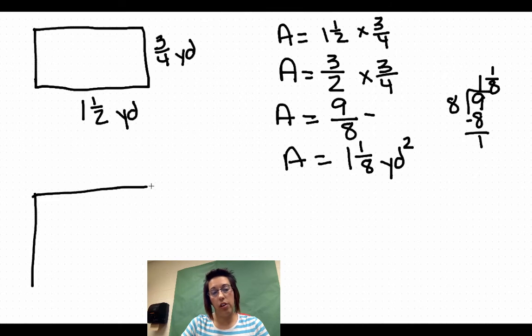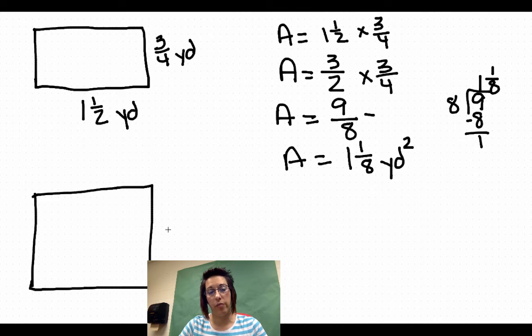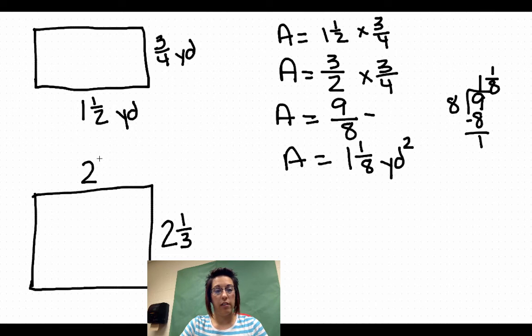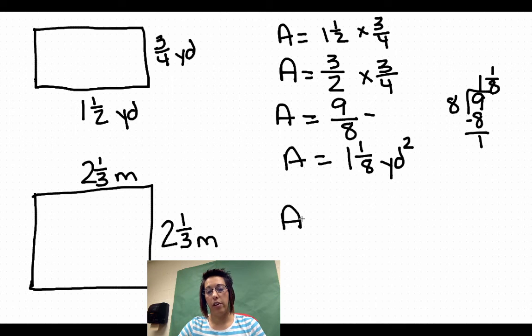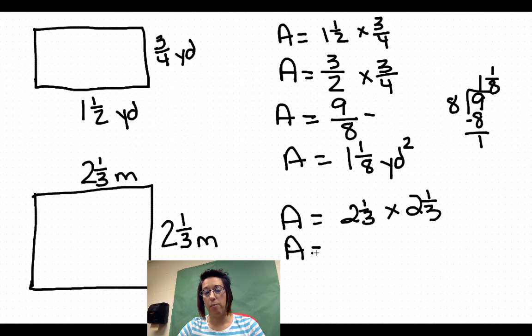Go ahead and look. More of a square type figure. We're going to call it two and one-third. And we'll say it's a square and we're going to call it meters. So area equals two and one-third times two and one-third. We have to make them improper.